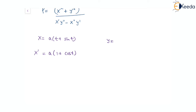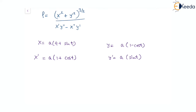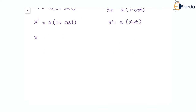Similarly, y equals e times of 1 minus cos t, so y-dash will be e times of sin t, since the differentiation of cos t is minus sin t. Now differentiating x-dash again to get x-double-dash: that will be e times of minus sin t. And y-double-dash will be e times of cos t.